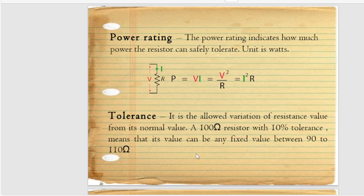Tolerance is the allowed variation of a resistance value from its nominal value. For example, a 100 ohm resistor with 10% tolerance means its value can be anywhere between 90 and 110 ohms, depending on the materials and manufacturing quality. This tolerance allows us to calculate the exact power, exact current, and exact voltages required in smaller circuits where impedance is involved.